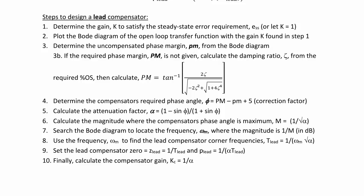Finally, we calculate the compensator gain k_c = 1/α. We will now do these steps several times in order to determine how to design a lead compensator.